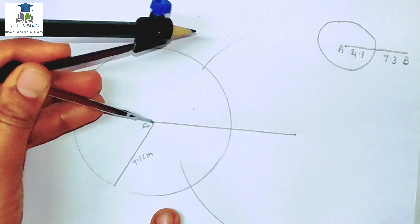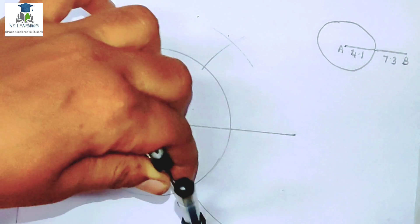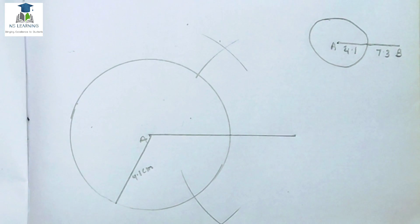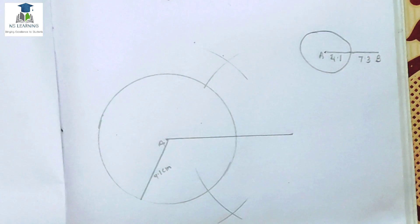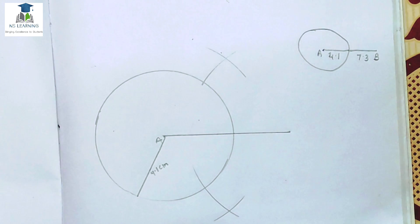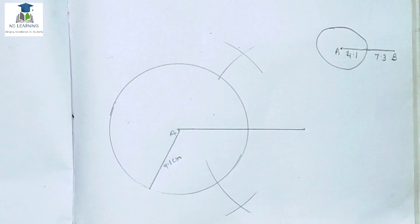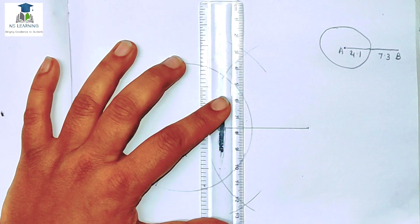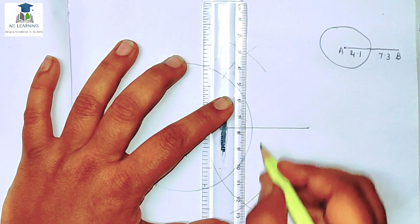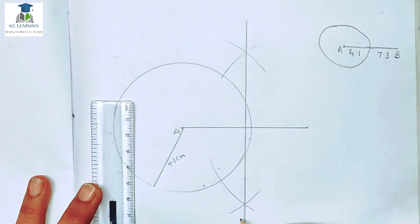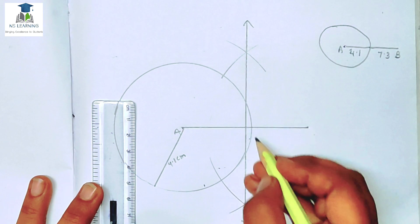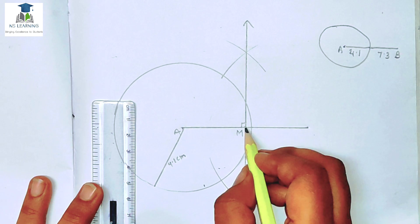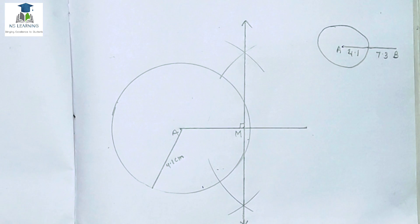यह थोड़ा slip हो रहा है — upper side और lower side। इन दोनों points को हम join कर देंगे। ओके, जो line bisector है हमारा, वो circle पर, circle के inside, या outside — कहीं भी हो सकता है। बस हमें यह perpendicular point जो मिला — perpendicular point M — यह हमें चाहिए था। इसलिए हमने उसका bisector किया।